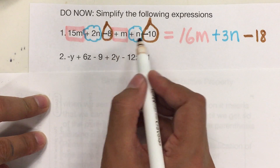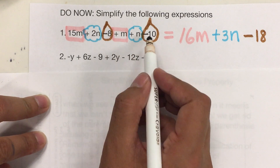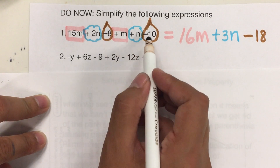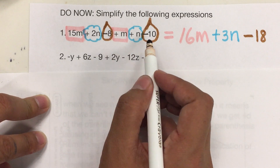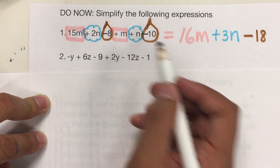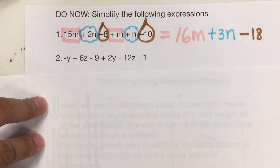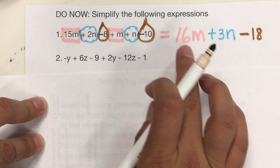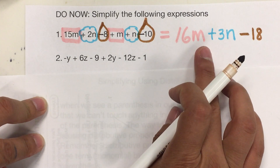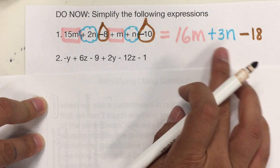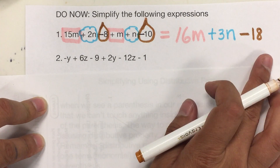And negative 8 plus negative 10 is negative 18. Remember that if we have the same sign, we add and keep the sign of the bigger one. So the answer for the first one is 16M plus 3N minus 18.